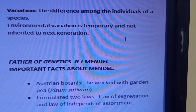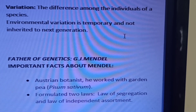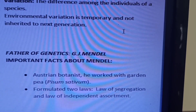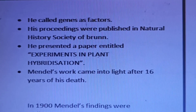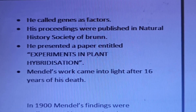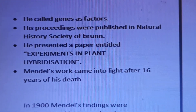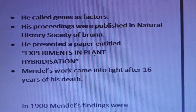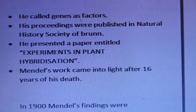He is an Austrian botanist who worked with garden pea, Pisum sativum, which is a highly self-pollinated crop. He formulated two laws: the law of segregation and the law of independent assortment. He called genes as factors, and Mendel's proceedings were published in the Natural History Society of Bern. He presented a paper entitled 'Experiments in Plant Hybridization.'